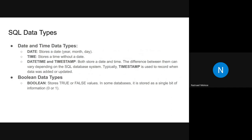Another SQL data type category is date and time types. We have DATE to store a date, TIME to store time without a date, and DATETIME and TIMESTAMP to store both date and time. The difference between them can vary across SQL database systems.